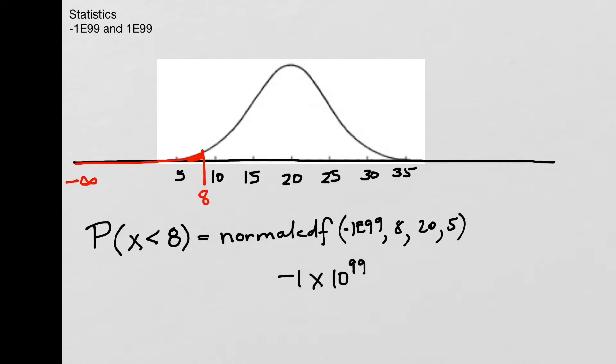All right, so how do we actually type this into the calculator? That's the issue here. So for this problem I want negative 1E99. To type in the negative you have to press the negative in parentheses, and then the 1.